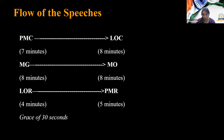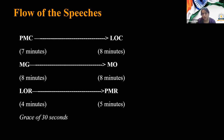The flow of speeches looks like this: first you have PMC — Prime Minister Constructive speech — for seven minutes, followed by LOC — Leader of Opposition Constructive — for eight minutes. After that, Member of Government gives a reconstructive speech for eight minutes. Then Member of Opposition gives eight minutes. Then LOR — Leader of Opposition's reply — for four minutes, and PMR — Prime Minister's reply — for five minutes.